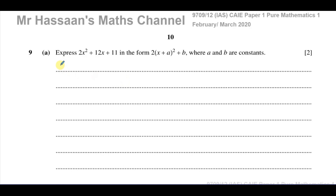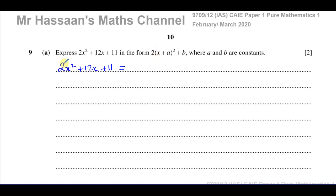There are two ways I'm going to show you. The first way, which I recommend, uses our understanding of expanding brackets in reverse to put them back into squared brackets. The first step is: we have 2x squared plus 12x plus 11, and we want to write it so that the x squared term has a coefficient of 1.